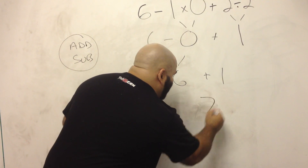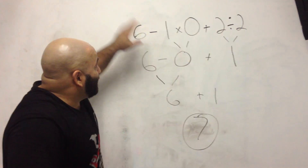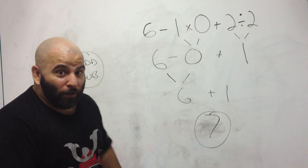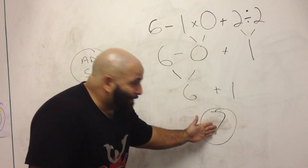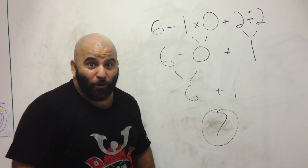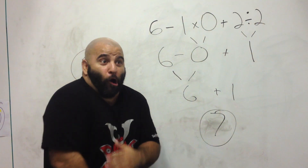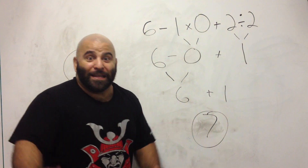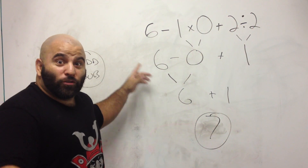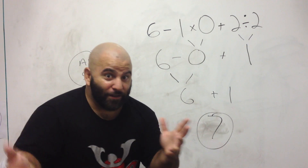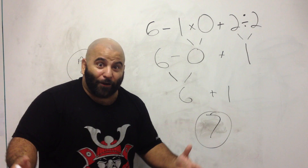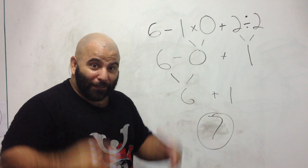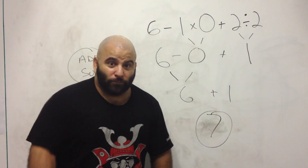6 plus 1 is 7. So the infamous 6 minus 1 times 0 plus 2 divided by 2, following the process, winds up being 7. Now I'm going to post this video on these threads. I guarantee somebody's still going to put 1, 5, 3.5 — it's still going to happen. But for those of you that took the time to watch this, thank you. Hopefully those of you that have children, 5th grade is around 9 years old — maybe 8 is a good time to start with "Please Excuse My Dear Aunt Sally," order of operations. Math is awesome. Master Chimp out. Peace.